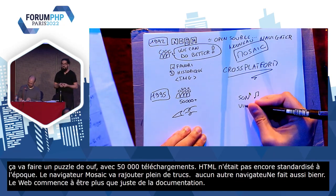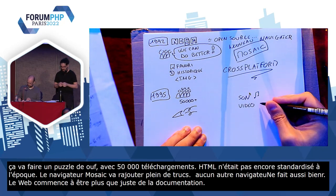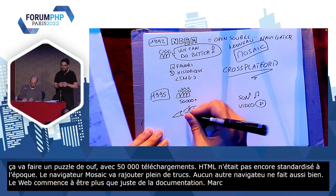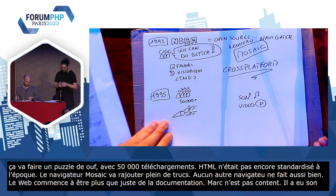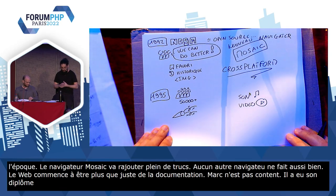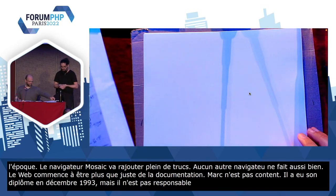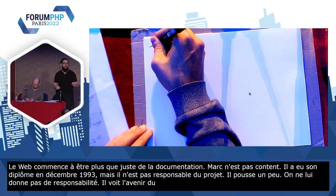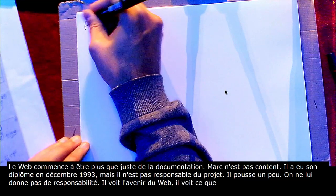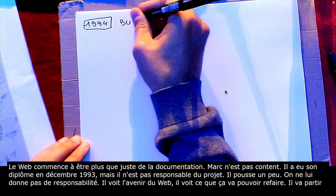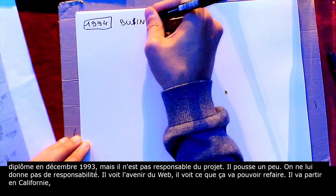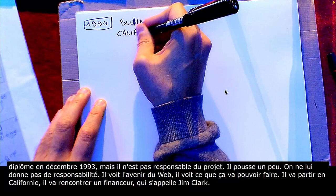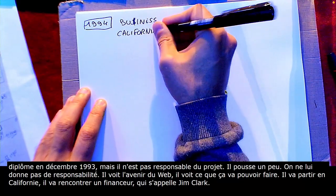Face à ça, Marc n'est pas content. Marc a eu son diplôme en décembre 1993, mais il n'est pas responsable du projet. Il pousse un petit peu et on ne lui donne pas de responsabilité. Mais lui, il voit l'avenir du web — enfin, non, je déconne, il veut juste se faire du pognon. Donc, il va partir en Californie, il va rencontrer un financeur qui s'appelle Jim Clark et ils vont ensemble créer la première entreprise à but commercial dédiée au web, qui s'appelle l'orient Mosaic Communications Corporation.